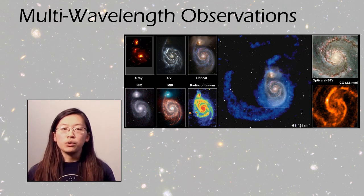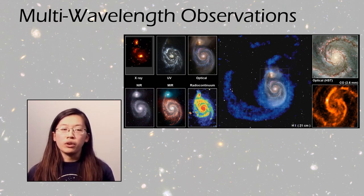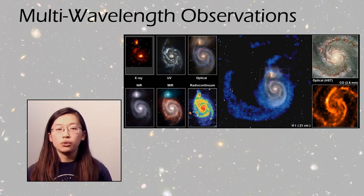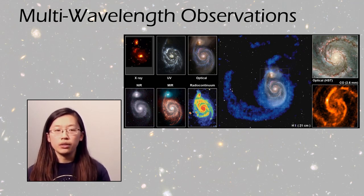One of these is using multi-wavelength observations. As you can see, this galaxy looks very, very different in the X-ray, as opposed to the optical, as opposed to the infrared. So all these different wavelengths serve to highlight different parts of this galaxy and the different processes going on there.